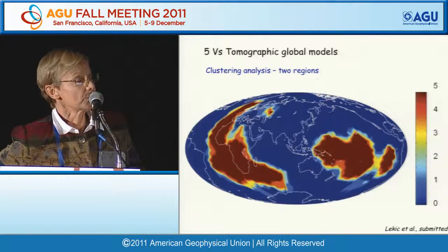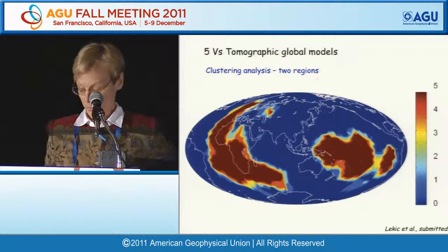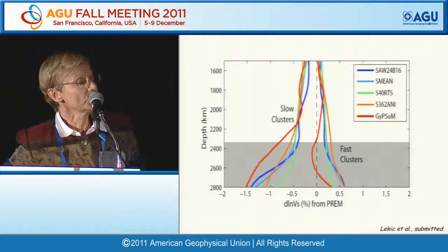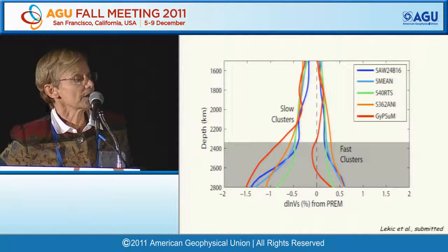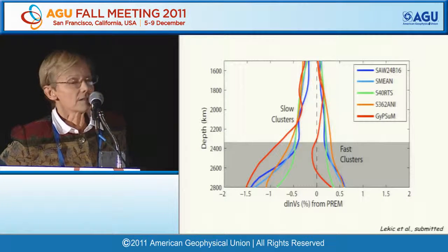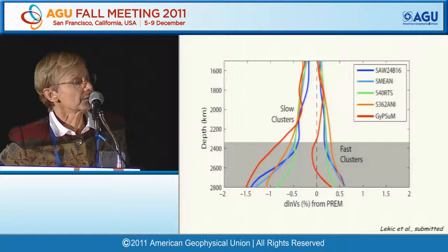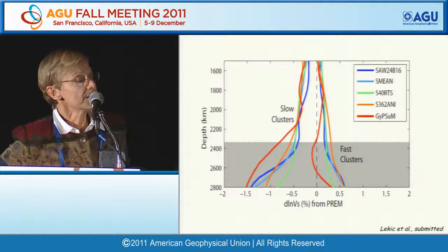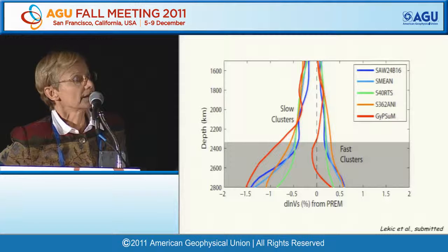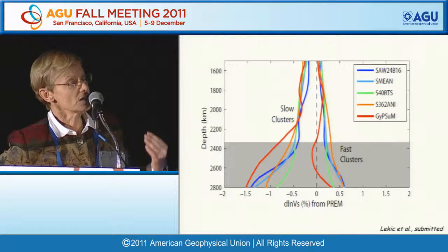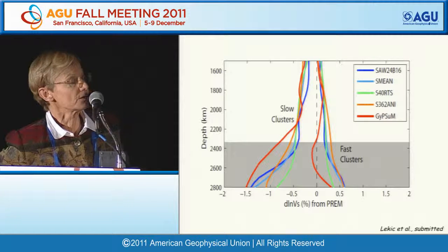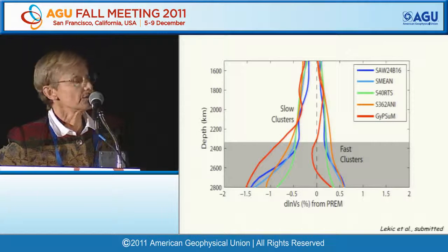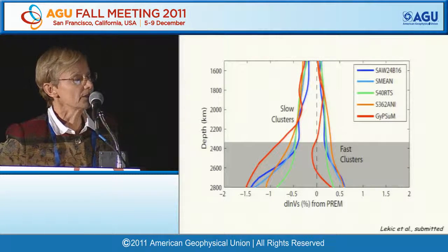The borders of these superplumes are in very good agreement between models. Looking at velocity distribution with depth in the two provinces—faster and slower than average—the fast regions increase relatively smoothly with depth, whereas the slow regions show a marked change of gradient around 500 kilometers above the core-mantle boundary, indicative of a somewhat different nature of these regions.